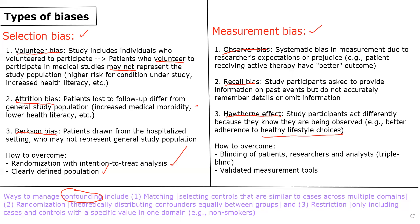For measurement bias, the two main ways to overcome it are, most importantly, through blinding — and ideally triple blinding — which involves blinding patients, blinding researchers who are seeing the patients and noting outcomes over time, and even blinding the analysts or biostatisticians performing the analysis at the end. The second way includes using validated measurement tools, so that researchers have good inter-observer reliability and are making accurate measurements over time.